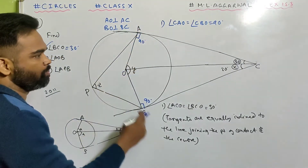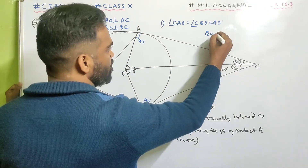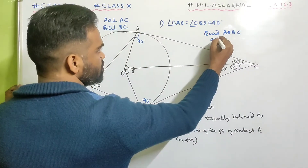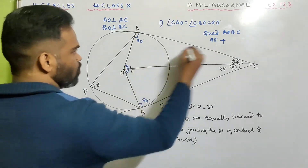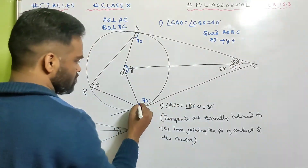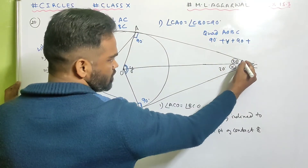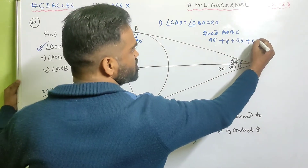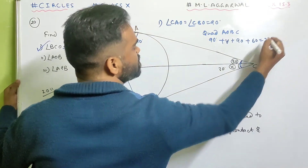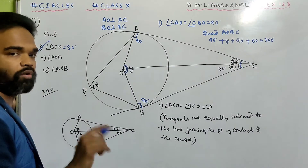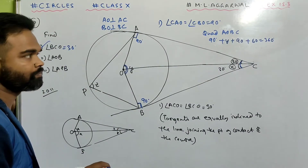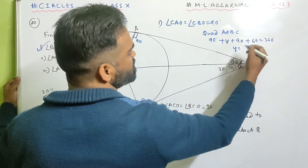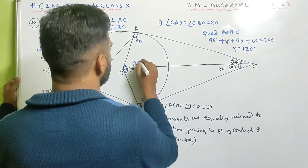Now look at quadrilateral AOBC. 90 plus Y plus 90 plus (30 plus 30) equals 360. So Y plus 240 equals 360, giving Y equals 120 degrees. Angle AOB is 120 degrees.